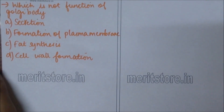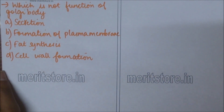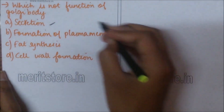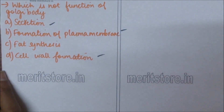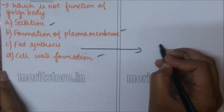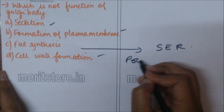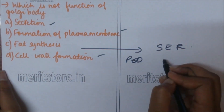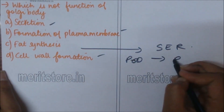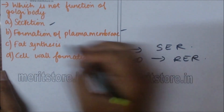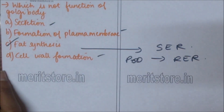Which is not the function of Golgi body? A) secretion, B) formation of plasma membrane, C) fats synthesis, D) cell wall formation. Secretion, formation of plasma membrane, and cell wall formation are functions of Golgi bodies. Fat synthesis is a function of smooth endoplasmic reticulum, and protein synthesis is a function of rough endoplasmic reticulum. So option C is the correct answer.